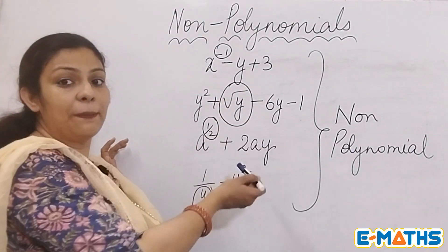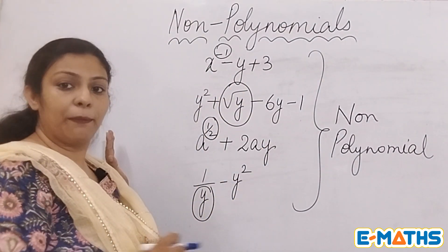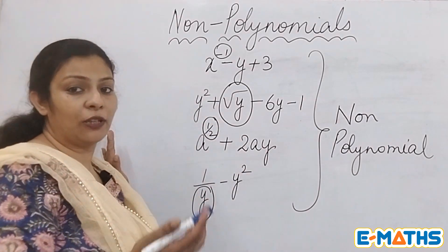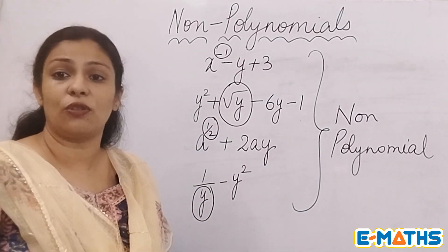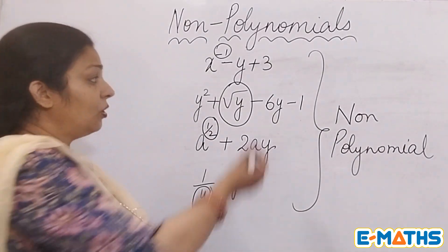These are just expressions, so you can tell the number of terms in it, but it will remain a non-polynomial. But you can name it as binomial, trinomial, multinomial, or monomial - that is fine because that is the name given to the expressions also.